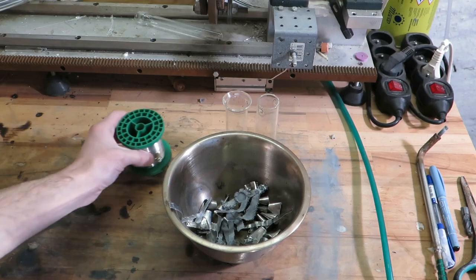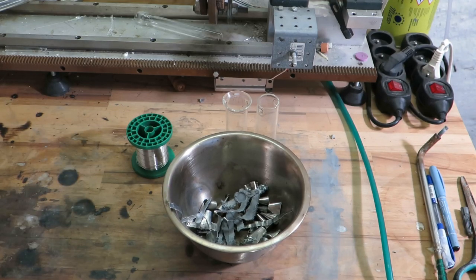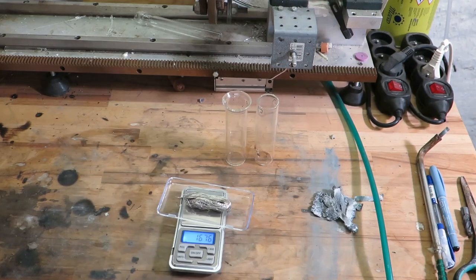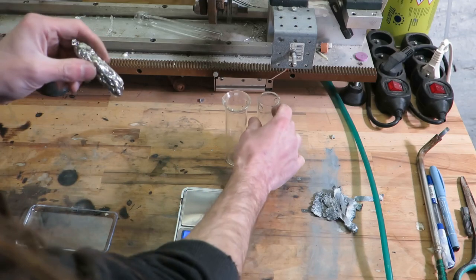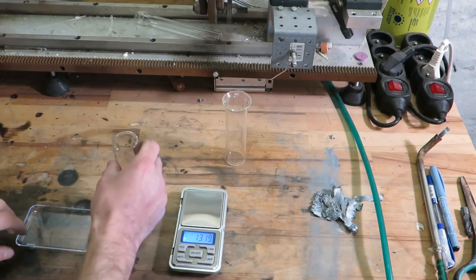Next metal you need is tin. I am using lead-free solder, which is 96% tin, 3% is silver, and 0.5% copper. Rest seems to be resin. I want to make about 50 grams of this stuff, so I measure about 25 grams of solder. Now I am going to melt it because I want to get rid of the flux.